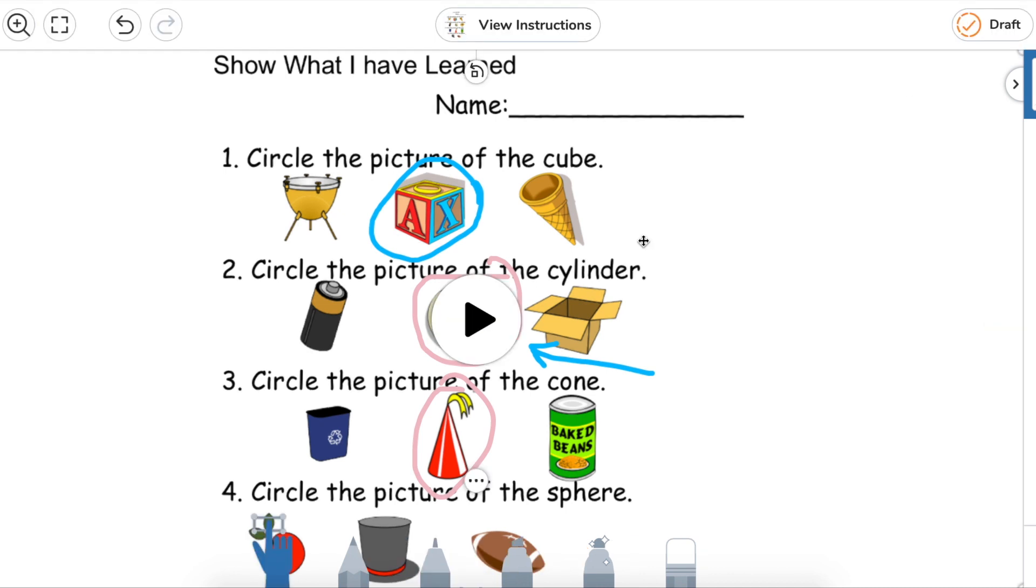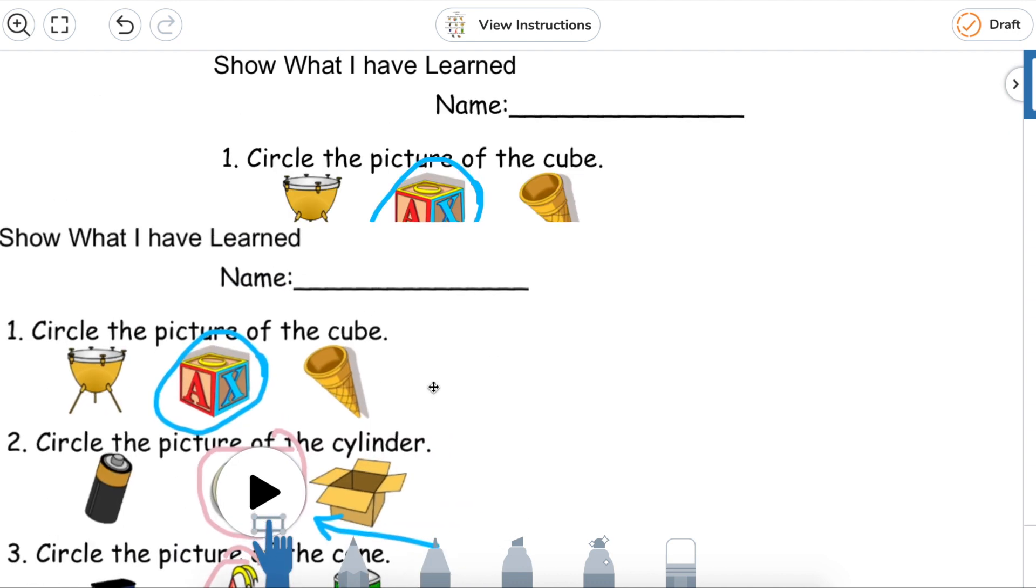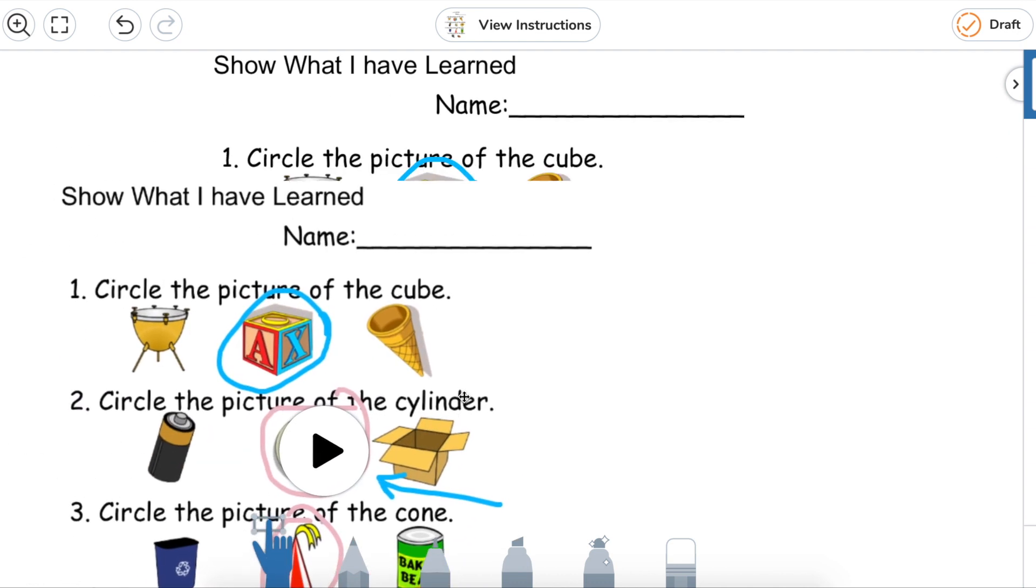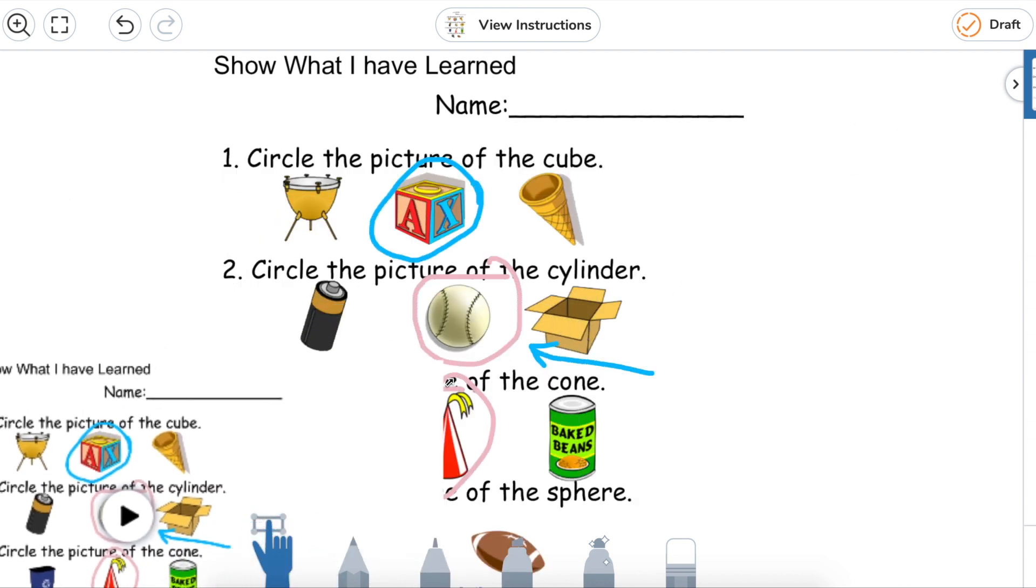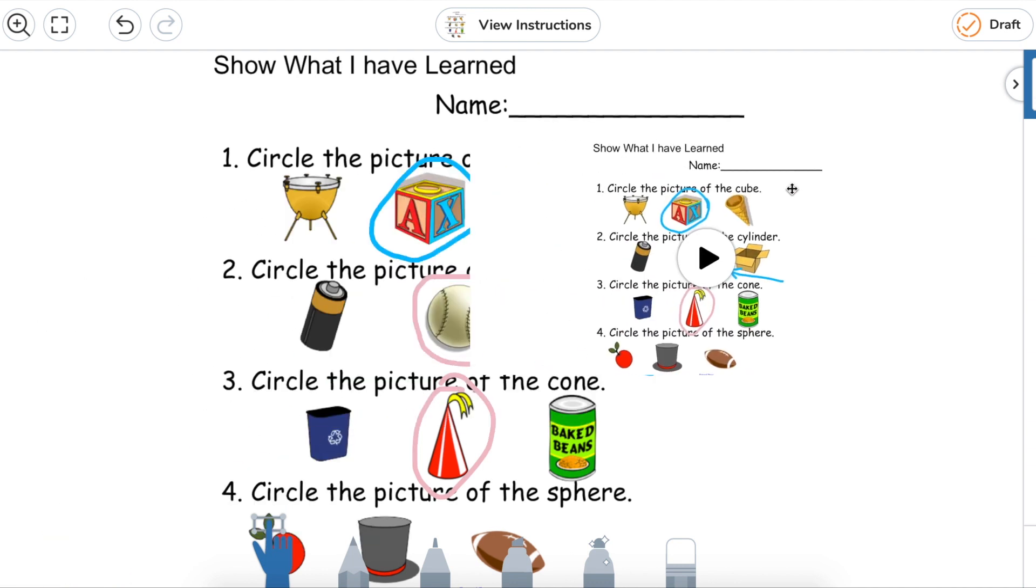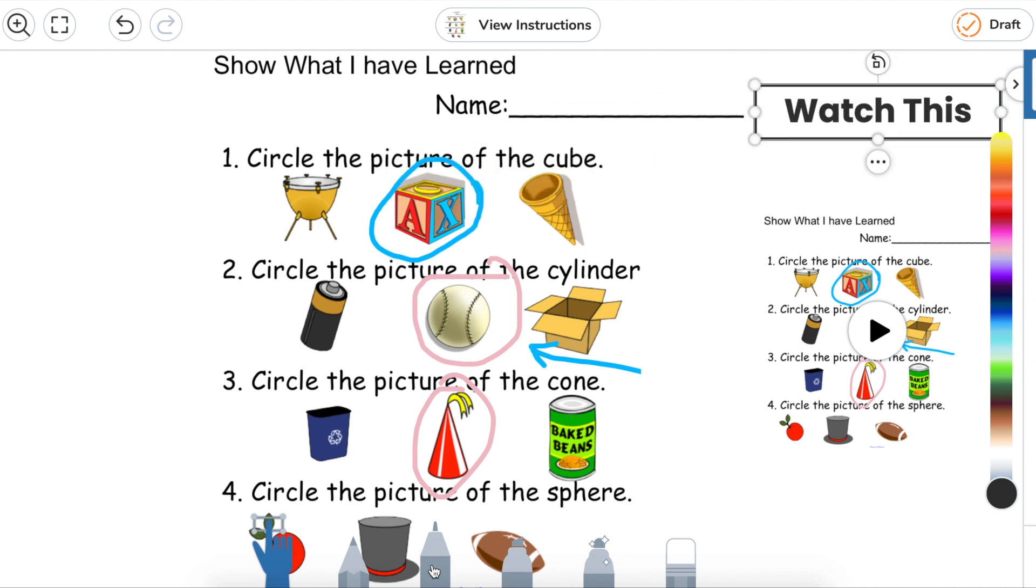So now that I've recorded that video, what Seesaw does is it puts that video over top of the original, which if you want the student to be able to go back and make the changes, what I would suggest is making that a bit smaller and moving it over to the side where the student can watch it. You can even add a label on top of that that says like watch this, and you can also add like a little arrow so that the student knows that they need to watch your video on how they need to make corrections.